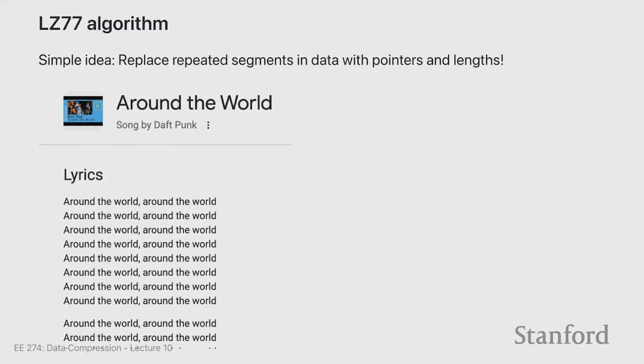The idea of LZ77 is very simple: history repeats itself. You have some data and you see some sequence — you've probably seen it before in some form. If you have seen it before, why not just put a pointer saying 'I saw this word 100 words ago' or 'I saw this sentence 1000 sentences ago'? A song that just repeats each line is very well compressible with this technique. The idea is to replace repeated segments in data with pointers, specifically an offset and a length.